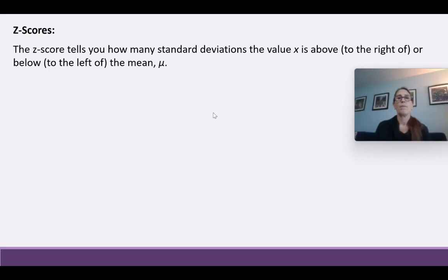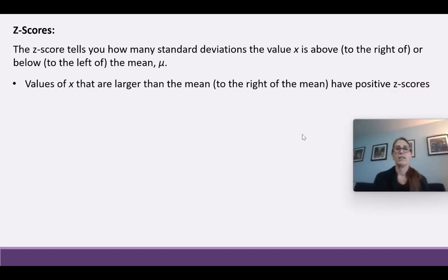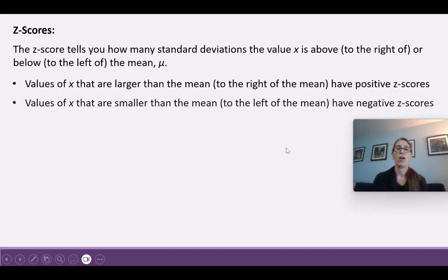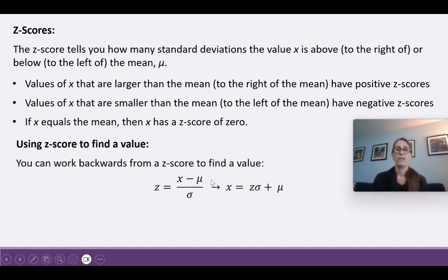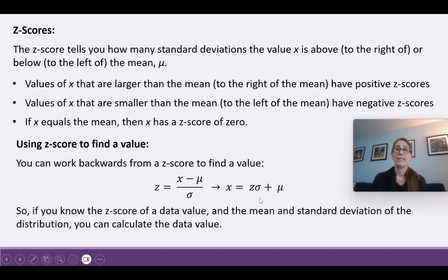Z-scores tell you how many standard deviations the value x is above (to the right of) or below (to the left of) the mean. Values larger than the mean have positive z-scores; values smaller than the mean have negative z-scores. If x equals the mean, the z-score is zero. We can also work backwards: if we know the z-score, multiply both sides by sigma and add mu, giving x = z·sigma + mu.